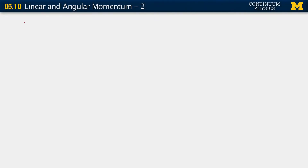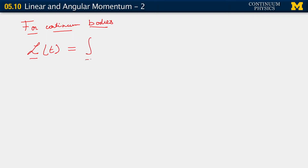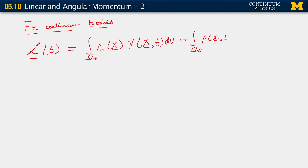This essentially means we need to write out their rates, and we're talking here of continuum bodies. The linear momentum is L as a function of time, equal to the integral over omega-naught of rho-zero as a function of position times v as a function of position and time dv, which can also be written without any change in definition as an integral over the current configuration involving the spatial density and the spatial velocity.